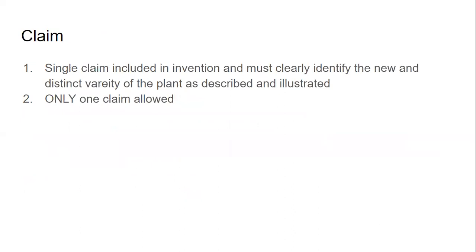For the claim in a plant patent, a single claim is included in the invention. It must clearly identify the new and distinct variety of the plant as described and illustrated — that is formal claim language and is unequivocally required within the claim. Only one claim is allowed. That covers MPEP 1500 and 1600 — both are fairly quick chapters, and that is the majority of what you need to know.